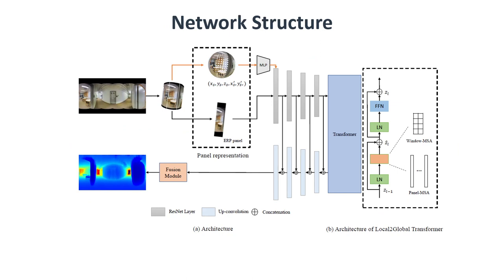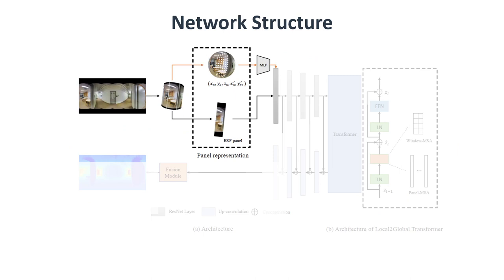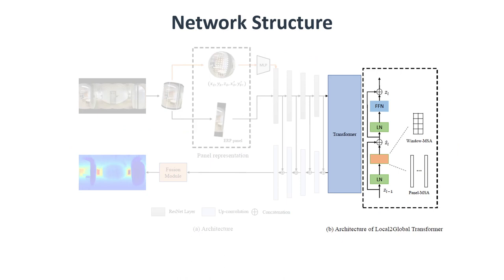This is an overview of PanelNet's structure for depth estimation. Once the panels and their corresponding global and local geometry are computed, we input the 5D vector to MLP to generate geometric features, and then add the features to the first layer of the encoder to make the network aware of the distortion.